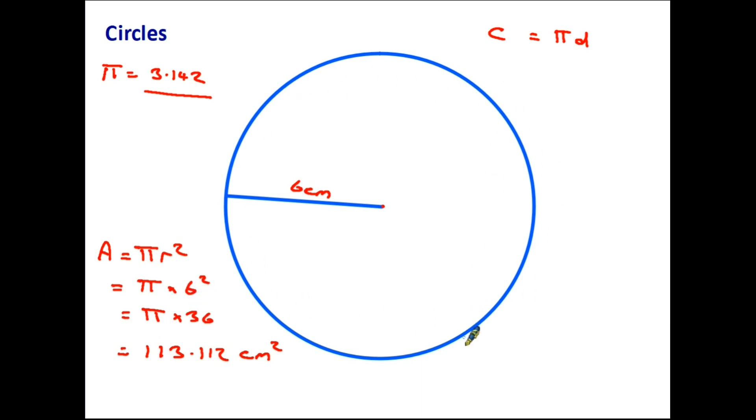Now if we want to find the circumference of the same circle, we are going to need not the radius but the diameter. But that's okay because the diameter is all the way across the circle - it is twice the radius - therefore it is 12 centimeters. So circumference is pi times the diameter, so that is pi times 12, and that equals 37.7 centimeters.